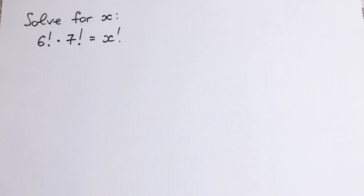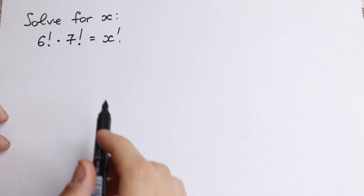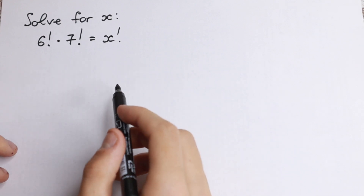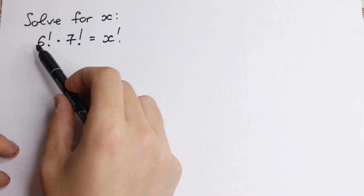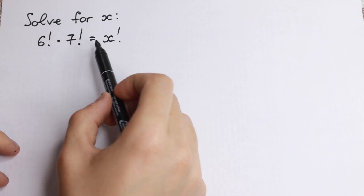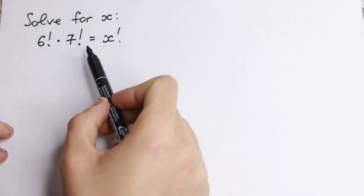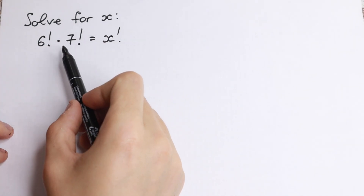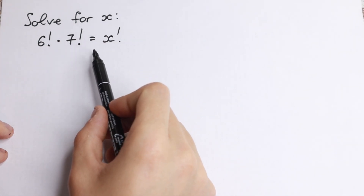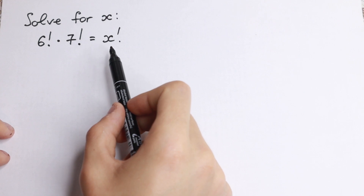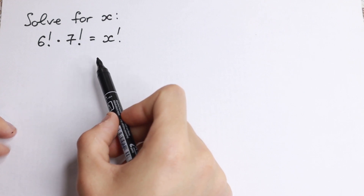Hello everyone! Welcome back to MathMode. We have a really interesting factorial problem. We need to multiply two factorials and find x. We have 6 factorial times 7 factorial equal to x factorial.